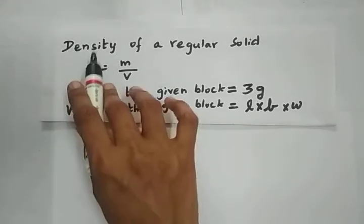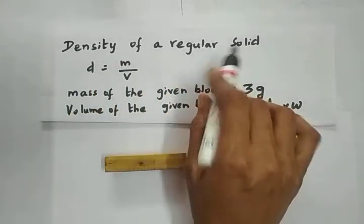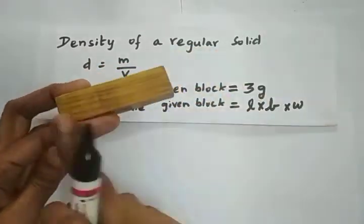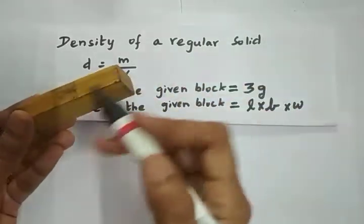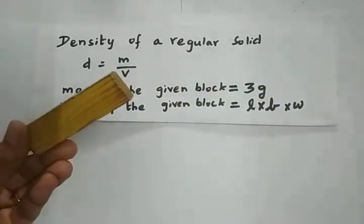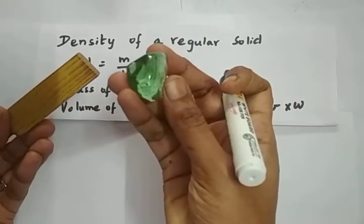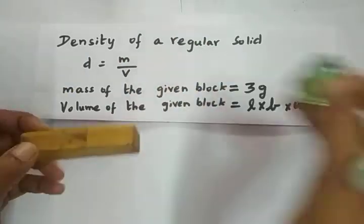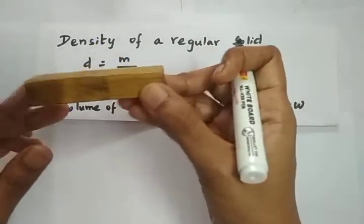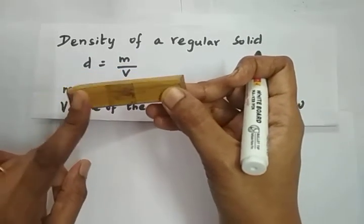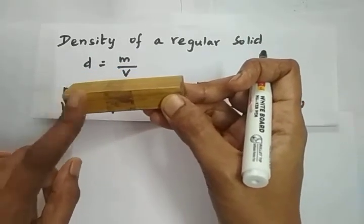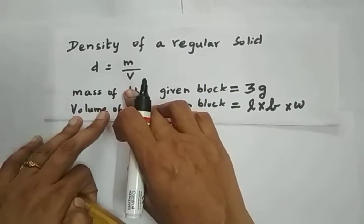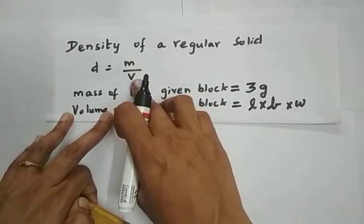In this video we will learn how to find the density of a regular solid — the given wooden block. This is a regular solid because it has a proper geometric shape, we can say it is in cuboidal shape. A pebble does not have a proper geometric shape, so we call it an irregular solid. We are going to find the mass and volume, then divide mass by volume to find the density, because density is mass per unit volume of a substance.